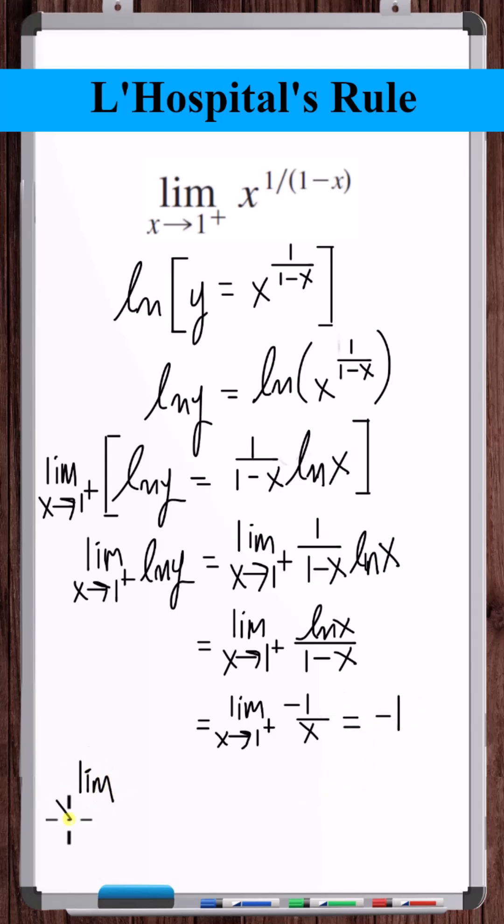So we have the limit as x approaches 1 from the right of natural log of y is equal to minus 1. Raising both sides to the power e, we get the limit as x approaches 1 from the right of the original function y is equal to 1 over e.